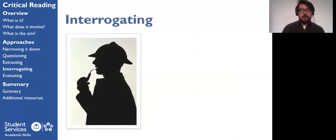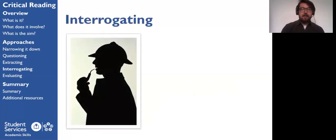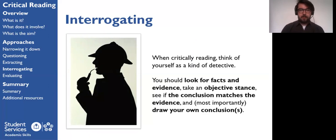So once you've extracted those things, you can start playing detective and interrogating the actual information that you've now extracted. So when you're critically reading, you can think of yourself as a kind of detective, and you're looking for facts and evidence. You're trying to take an objective stance and see if the conclusion matches the evidence. And most importantly, you want to draw your own conclusions at the end. So do you agree with the conclusions that the papers are drawing, or do you think that there's something else going on? It's always worth trying to insert your own critical thinking into this process while you're reading, because you'll often find that things don't quite add up. And actually, you can put that together through looking at how the information all links together.